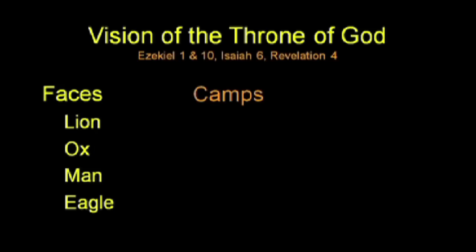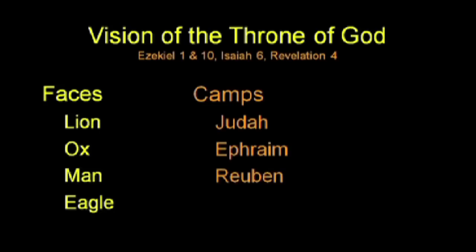We'll discover the camp of Israel, when laid out, would organize itself around four camps. One was the camp of Judah, one was the camp of Ephraim, one was the camp of Reuben, and one was the camp of Dan. All 12 tribes clustered, three each, into those four camps.